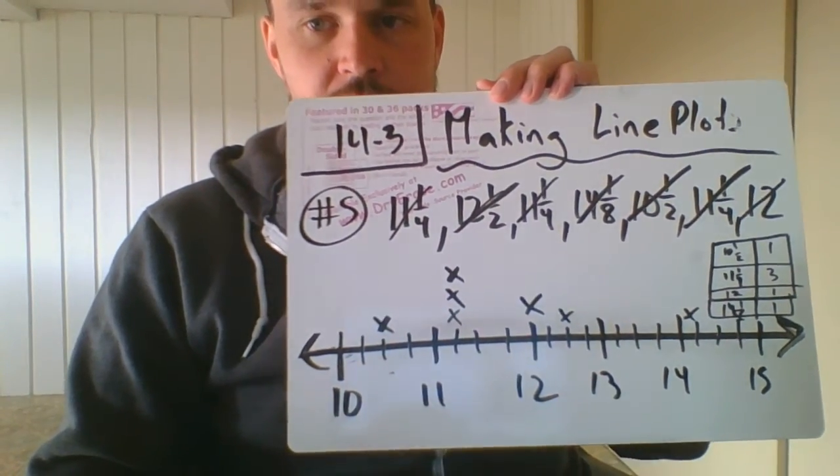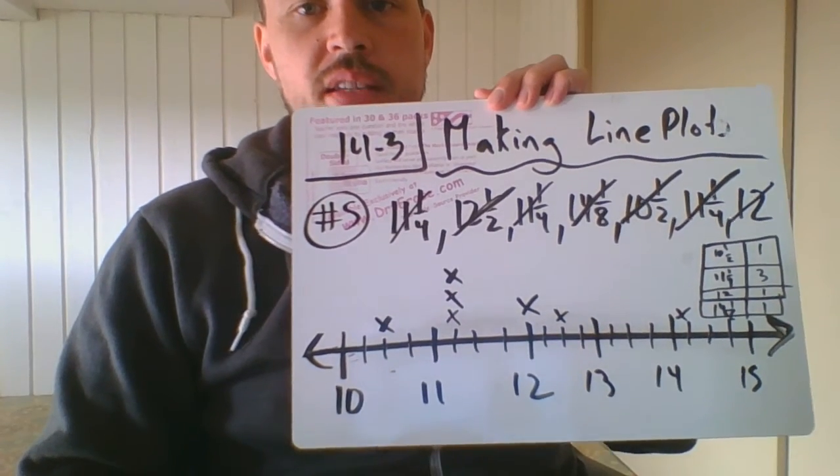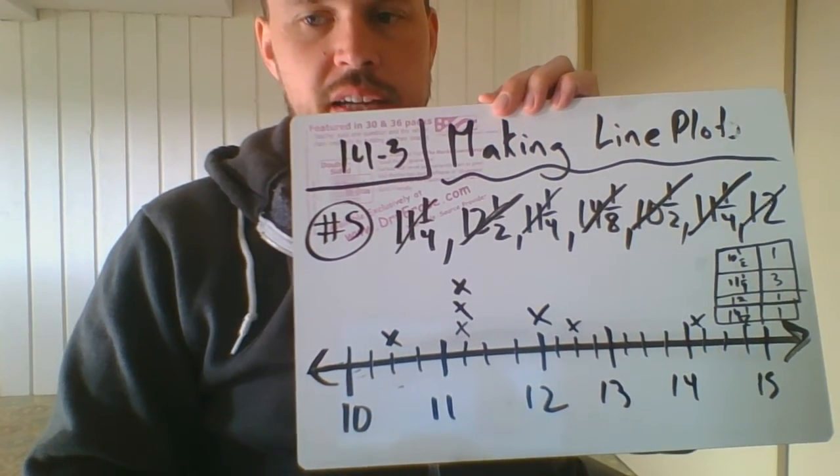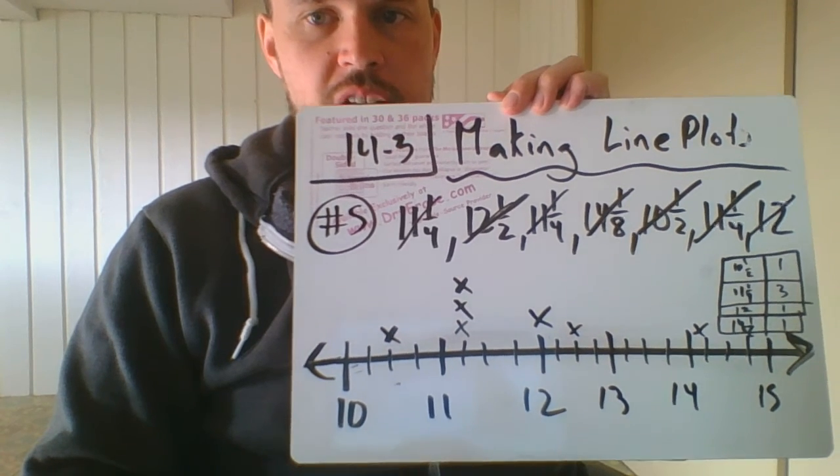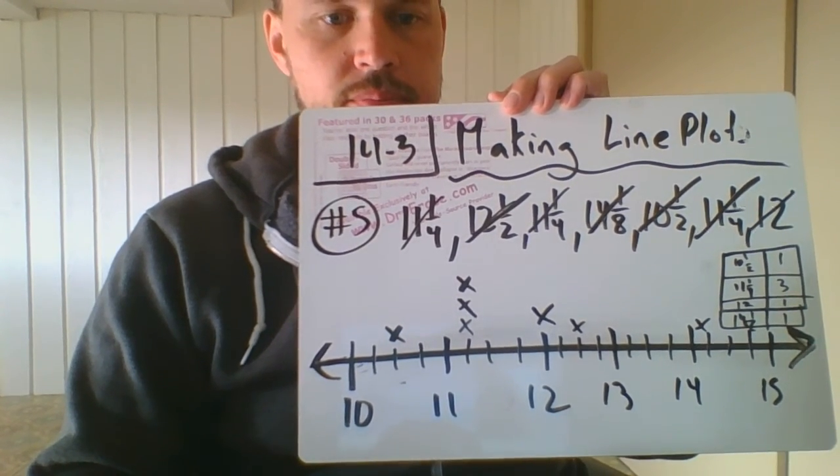Okay, and I also made a tiny little frequency table over here, which you can go off of. So this is how you make line plots. Do the best you can. I know we don't have graph paper, but just create number lines and put those spots. Good luck with this lesson.